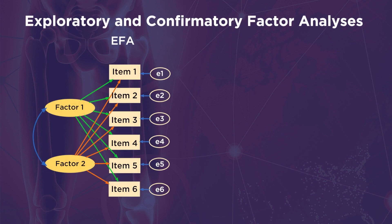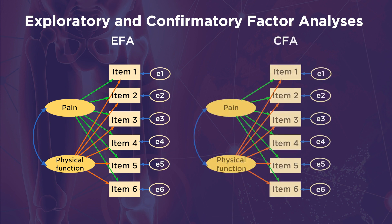Suppose the two factors identified in EFA were pain and physical function. Confirmatory factor analysis, or CFA, starts with a theory about what items measure what. CFA can be used to support the hypothesized structure uncovered from EFA by constraining some factor loadings to 0. For example, the factor loadings from the pain construct to items 4 through 6 and from the physical function construct to items 1 through 3 are constrained to 0 in this CFA.